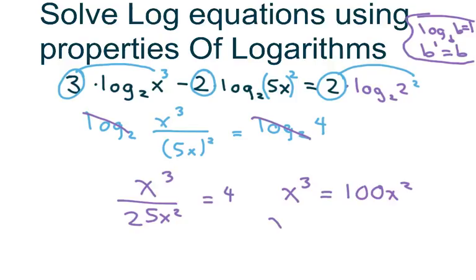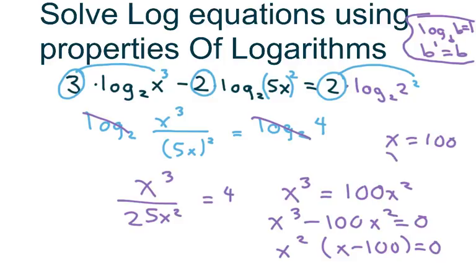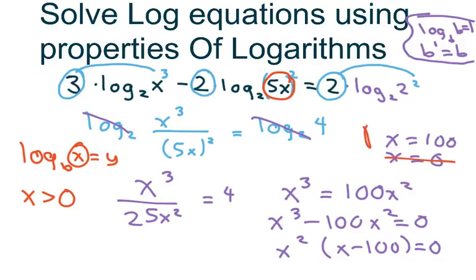I'm going to move everything over, factor out an x². So we get x equals 100 or x equals 0. The 0 doesn't work. You plug in 0 for example in this first quantity, you get log₂(0). And with logarithms, our quantity here for our domain has to be greater than 0. So this one doesn't work, but our 100 does. So that's our answer.